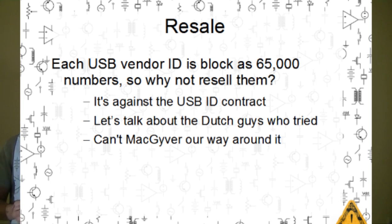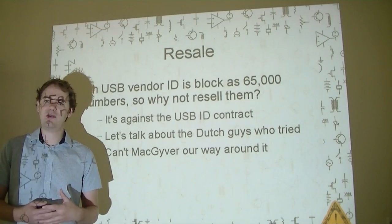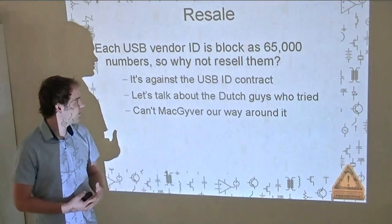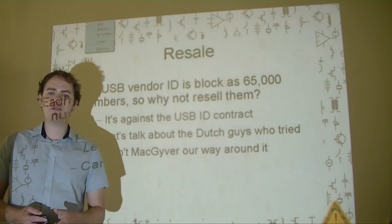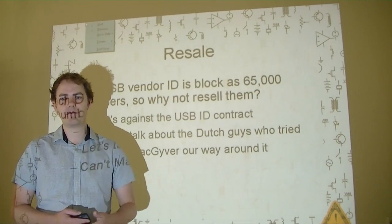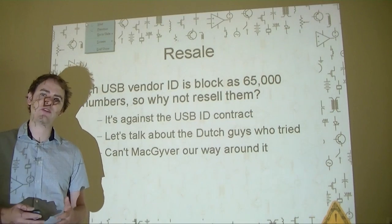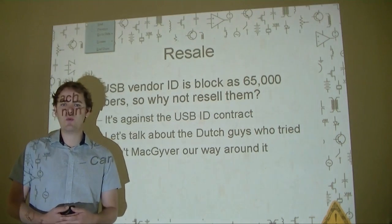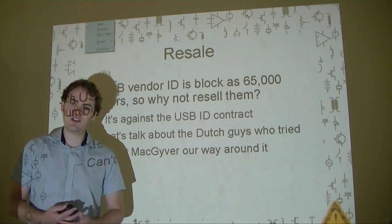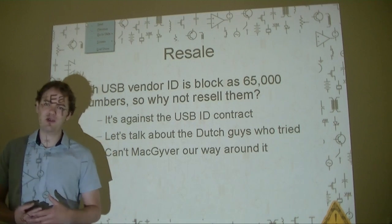The first thing everybody wants to do is try to make a group, buy an ID together, and either share it or resell them. The Implementers Forum has thought of this, and it's against their contract. So while you do have 65,000 IDs, you can't use them however you want — you can't sell or reshare them. Back when they first started issuing USB IDs, there was no contract involved. You gave them $2,000 and they issued you a number, and that was the end of the story. A small Dutch web shop bought an ID and was selling individual IDs to open source projects. Despite the fact that there was no contract prohibiting it, the USB Implementers Forum essentially harassed them and stopped that. There was no law to stop them and no legal grounds for it, but it wasn't worth the civil litigation to continue selling the IDs as a service to the open source community. So in general, there's no way to MacGyver our way around the Implementers Forum's prohibition on reselling and sub-licensing IDs.